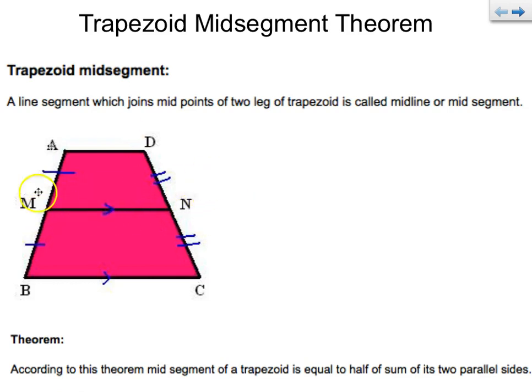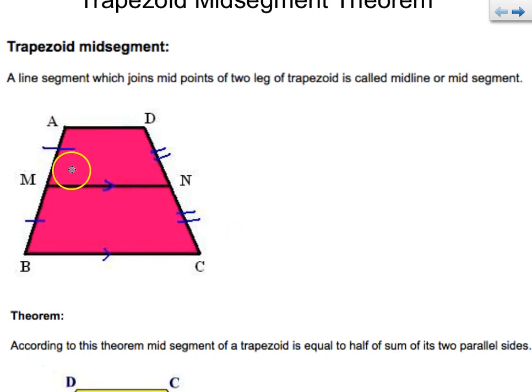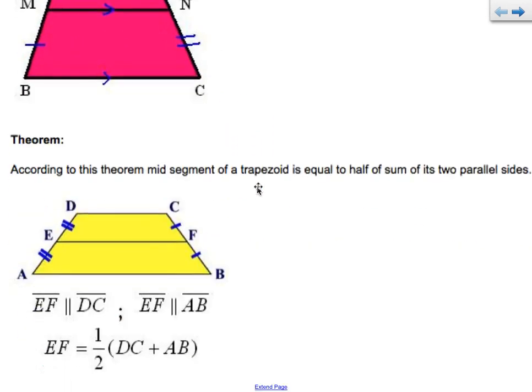So MN would be the midsegment of this trapezoid. You have a top, you have base one, base two, and then this M and this N are in the middle of this line segment. So it's the midpoint. If you were to do it on a coordinate plane, which you're not.